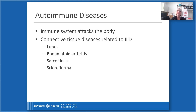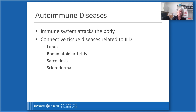Autoimmune diseases are diseases where the immune system of your own body attacks your body. Some connective tissue diseases related to ILD that fall under the autoimmune category are lupus, rheumatoid arthritis, sarcoidosis, and scleroderma. For people with rheumatoid arthritis, it's common to develop rheumatoid lung — the same connective tissue involved in your joints is present in your lungs and can be affected by the arthritic process, causing scarring of the lung tissue, which is considered an interstitial lung disease.